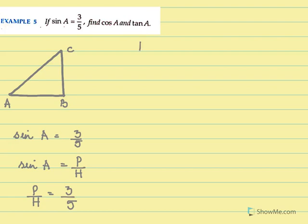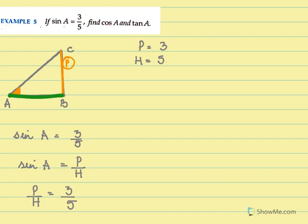Which means perpendicular is 3x and hypotenuse is 5x. To make things a little simple, because we're just beginning this chapter, we will just take perpendicular as 3 and hypotenuse as 5. So in this triangle, we're talking about sine A. For our sine A, our perpendicular is BC, and the base is AB, and the hypotenuse is AC.